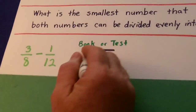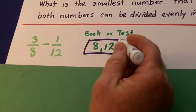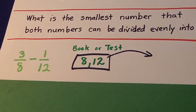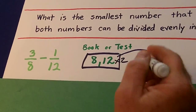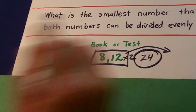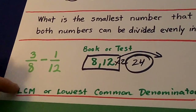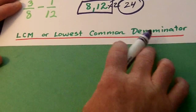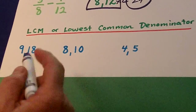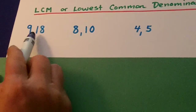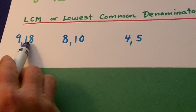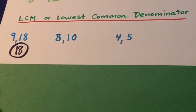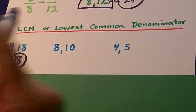8 and 12 — what's the smallest number both of those can be divided into? Can 8 go into 12 evenly? No. So multiply 12 times 2 — can 8 go into 24? Yes. Least common multiple or lowest common denominator — they're basically the same thing. What's the smallest number that both 9 and 12 can go into? They can both go into 36, but they can both go into 18. That's just a little bit tricky — even though it's simple.